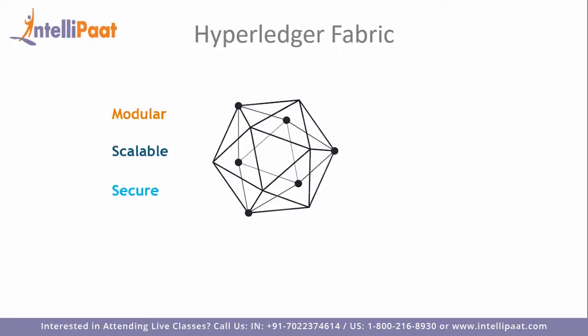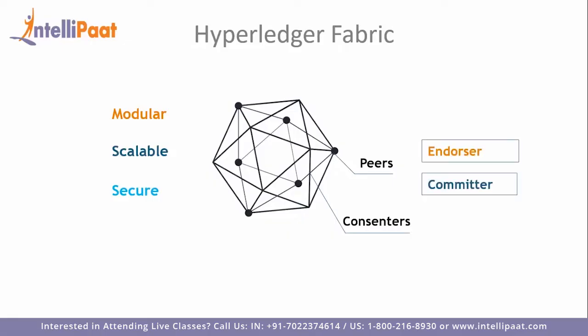Hyperledger Fabric is the modular, scalable, and secure foundation for industrial blockchain solutions. The most notable change here is that peers are decoupled into two separate runtimes with three roles: endorser, committer, and consenter.